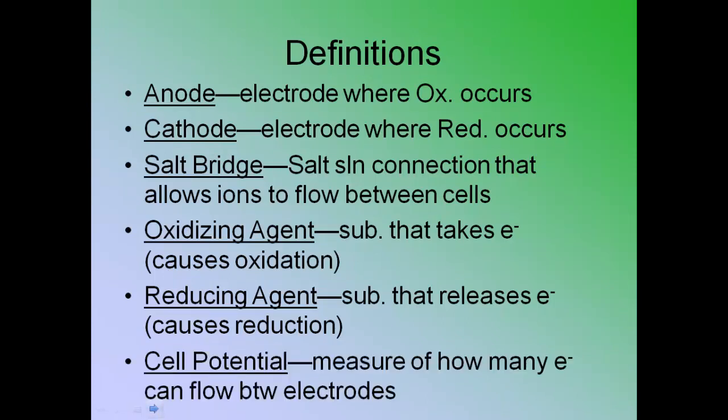And then lastly is something you might see or the words might pop up, and I just put it up there just in case they ever do, is something called cell potential. And the cell potential is the measurement of how many electrons can flow between the electrodes. This is how you know what the voltage is on a battery. So this comes up to voltage. So like a 9-volt battery produces 9 volts of electrons flowing from one side of the terminal to the other side of the terminal. That's how you know what the voltage is.